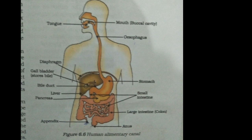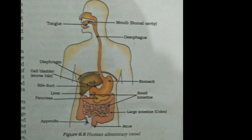The exit of food from the stomach is regulated by a sphincter muscle, which releases it in small amounts into the small intestine. The small intestine is the longest part of the alimentary canal, fitted into a compact space due to excessive coiling. The length of the small intestine differs in various animals depending on the food they eat. For example, herbivores eat grass.